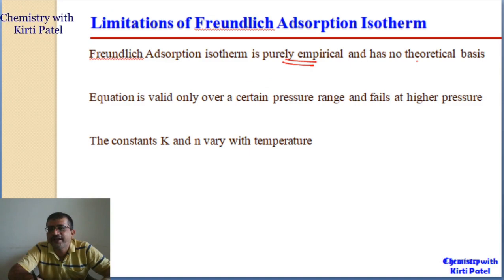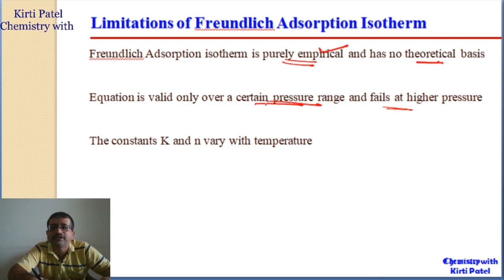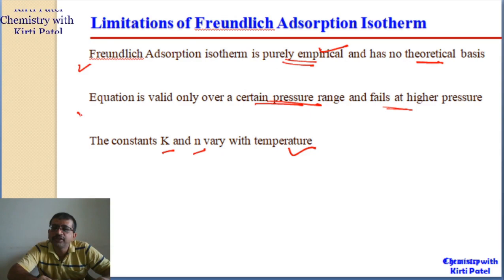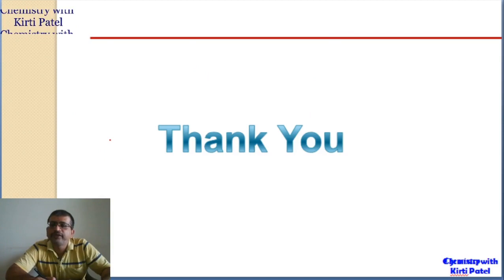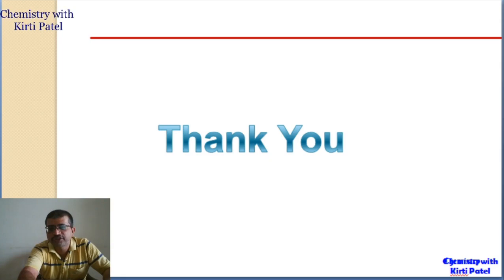However, the Freundlich adsorption isotherm has certain limitations. First, it is a purely empirical equation with no theoretical basis — the derivation is not known. Second, the equation is valid only over a certain pressure range and fails at higher pressures; it does not explain the saturation behavior. Third, the constants k and n vary with temperature, making it difficult to apply across different conditions. These are the important limitations of the Freundlich adsorption isotherm. In the next lecture we will study the Langmuir adsorption isotherm and further adsorption isotherm theories.